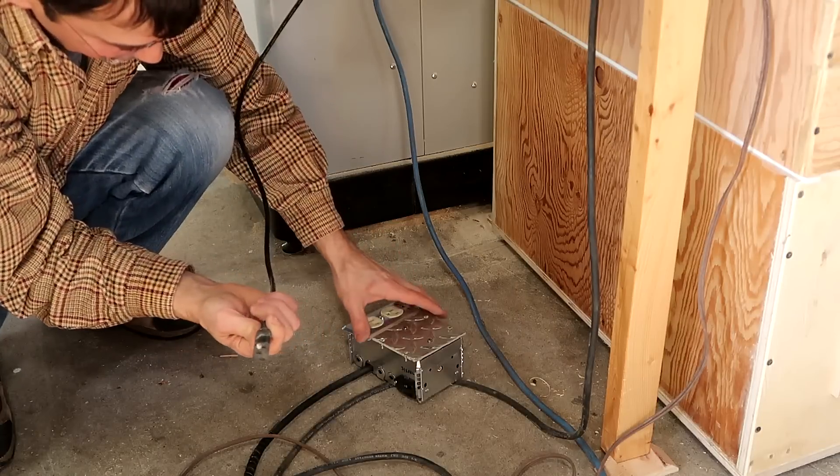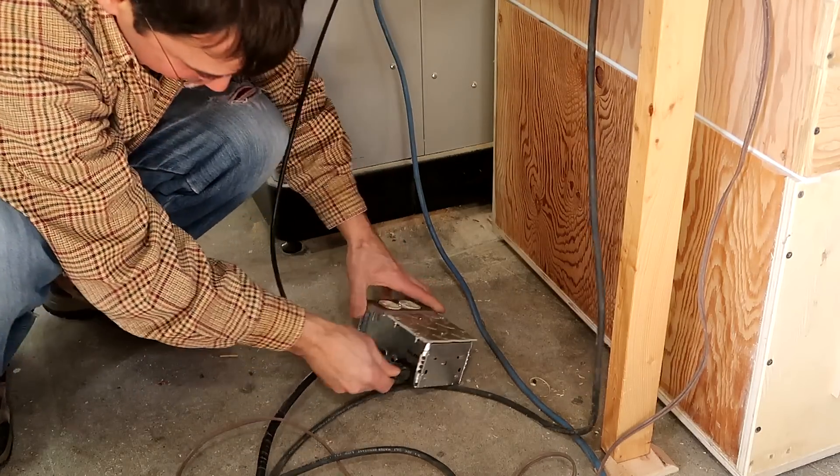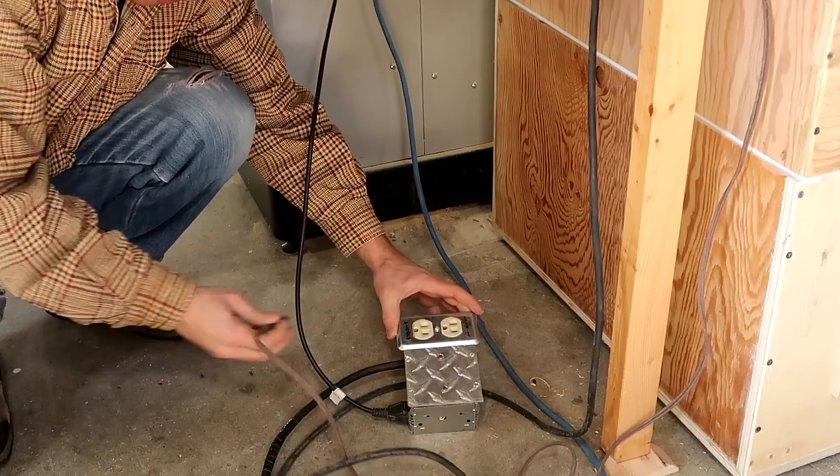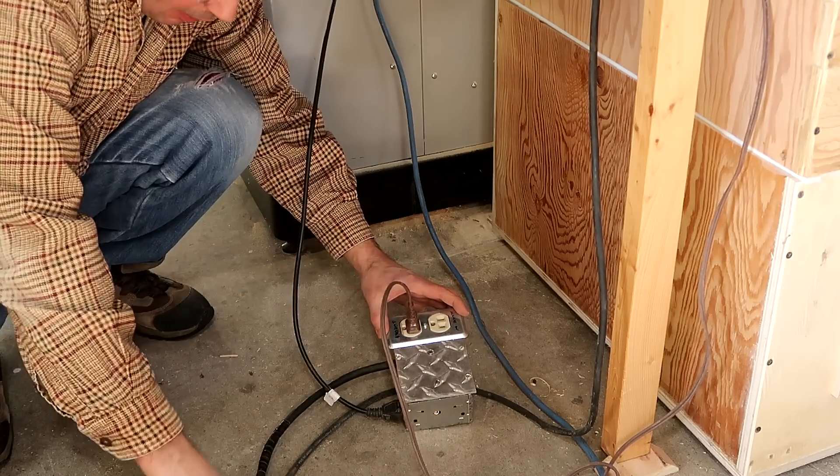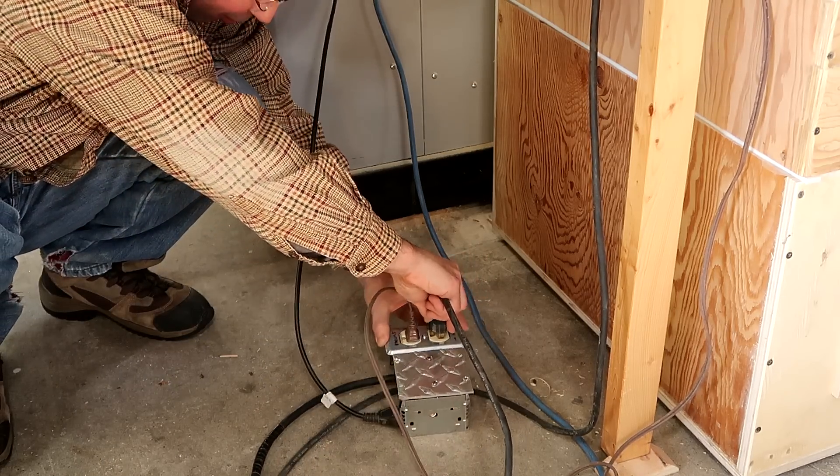So, this is wired into the 240 volt from the table saw. Gets power when it's turned on. And I'm going to plug the dust collector into the switched outlet. And the router into the unswitched outlet. So, I can use it as an extension cord.